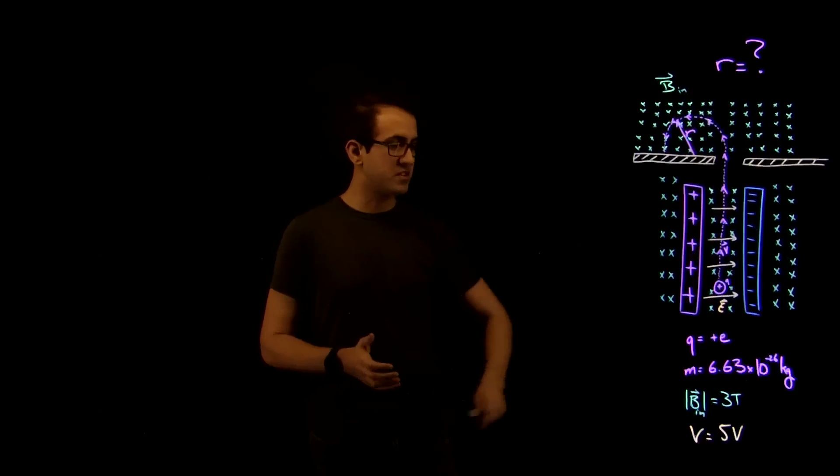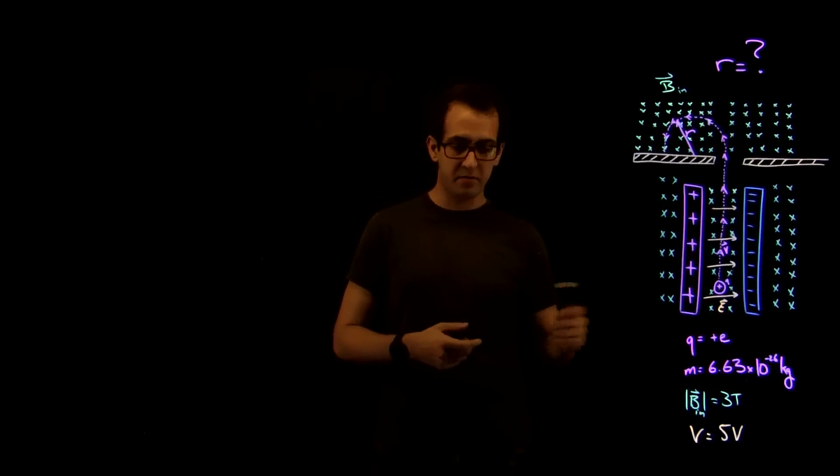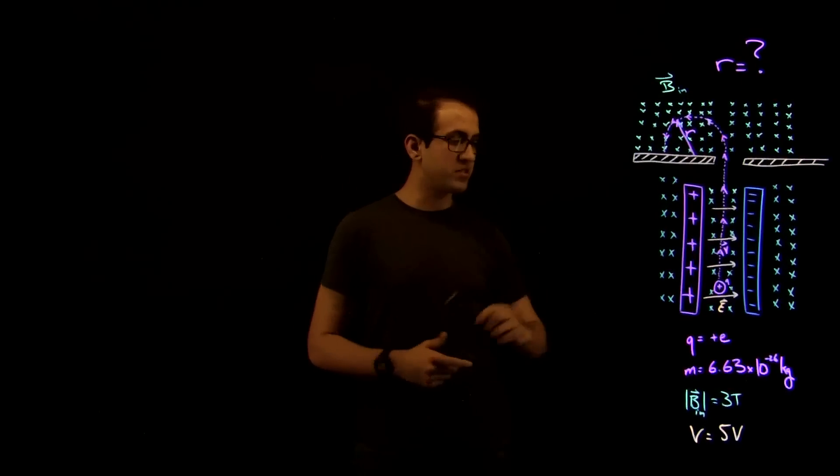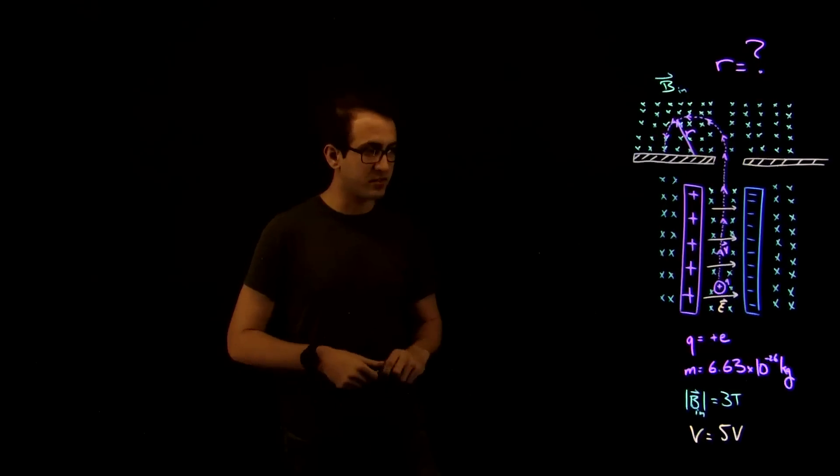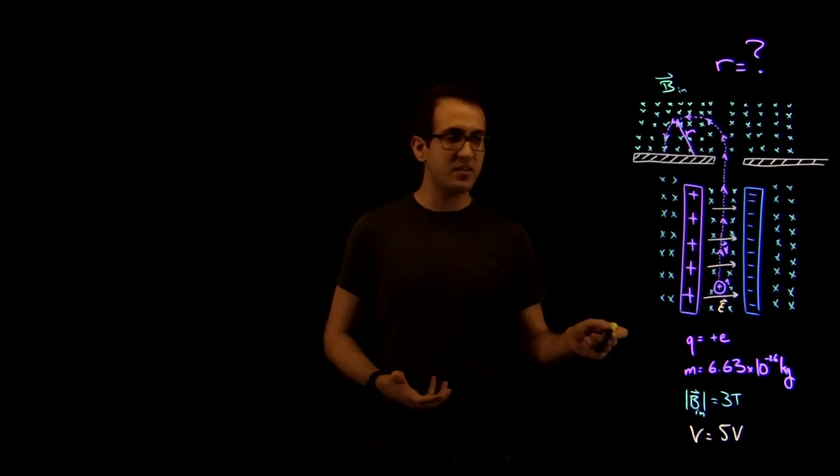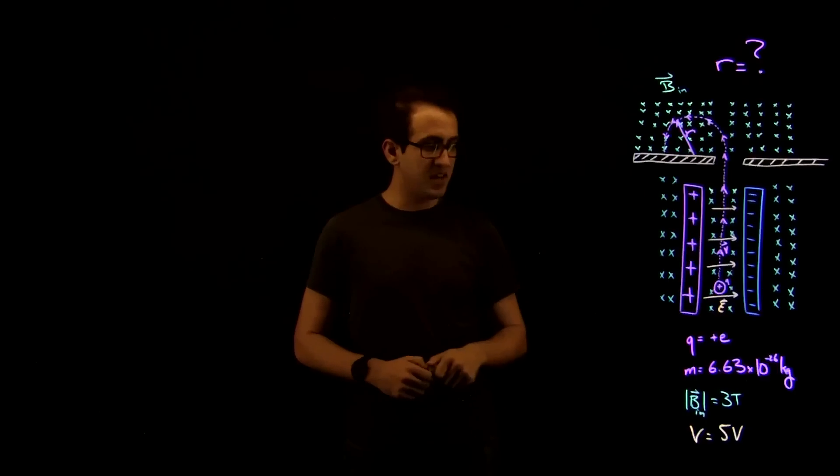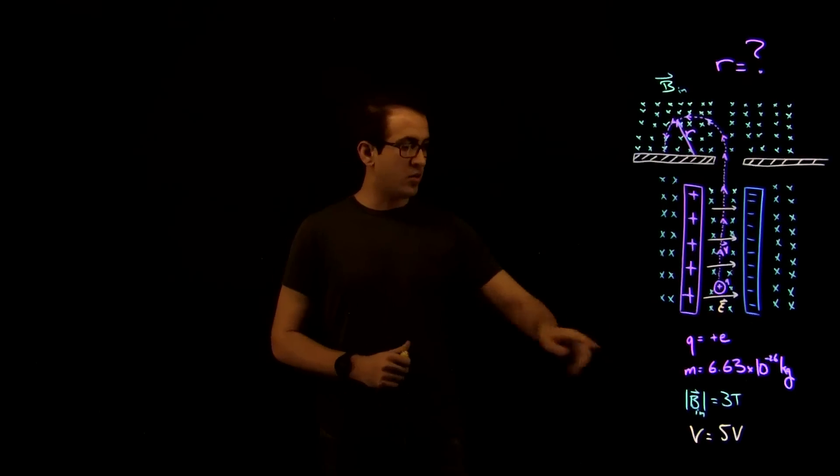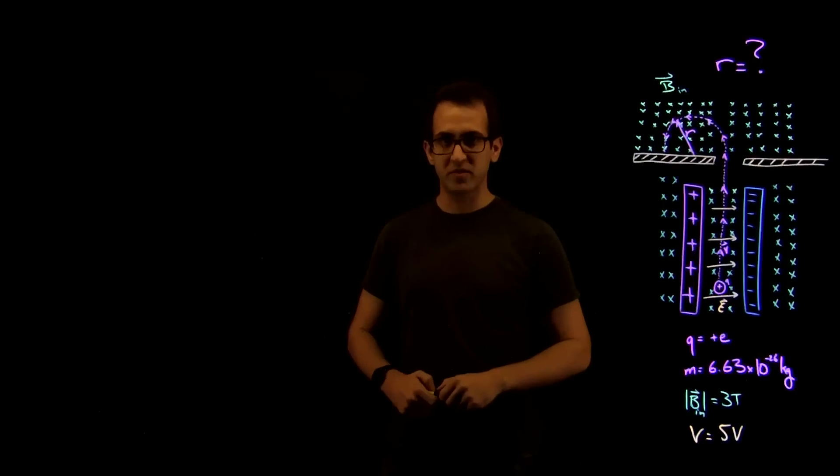So some things we know is that the mass of argon, for a single atom of argon, is 6.63 times 10 to minus 26 kilograms. It's singly ionized, so we know it has a charge of plus E. And we know that the potential it's accelerated through is 5 volts.